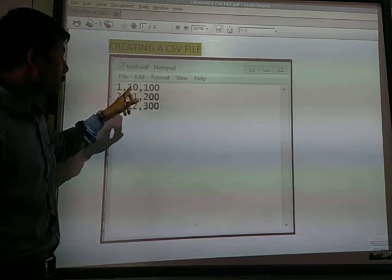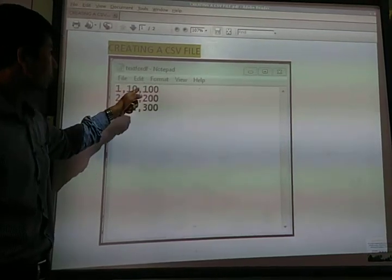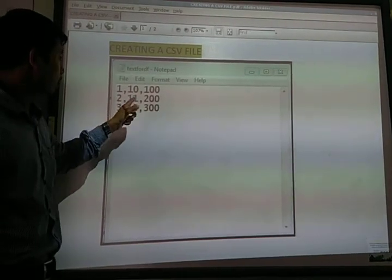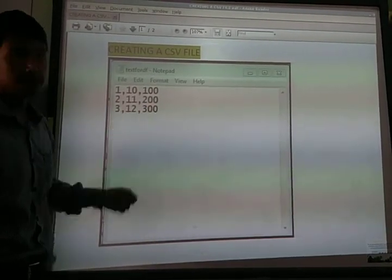So you have to split the values using commas. This is the first row with comma separated values, then the second row with comma separated values, and the third row with comma separated values.